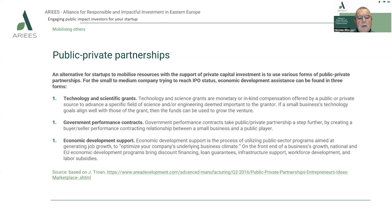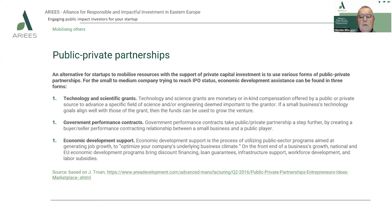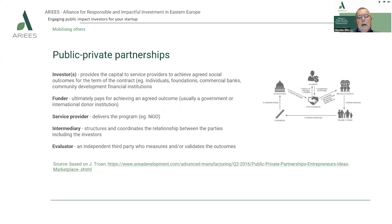The second form is government performance contracts. They take the public-private partnership a step further by creating a buyer-seller performance contracting relationship between a small business and the public player. The third form is economic development support — the process of using public sector programs aimed at generating job growth to optimize a company's underlying business climate. National or EU economic development programs bring discount financing, loan guarantees, infrastructure support, workforce development, and labor subsidies.